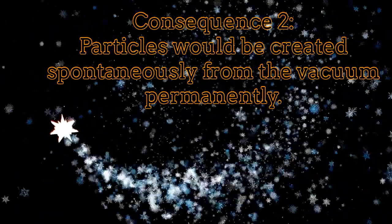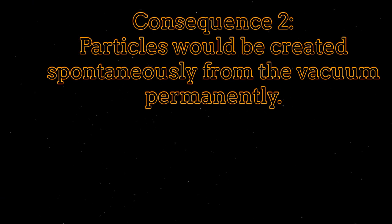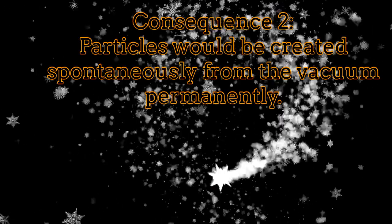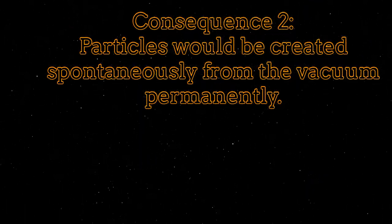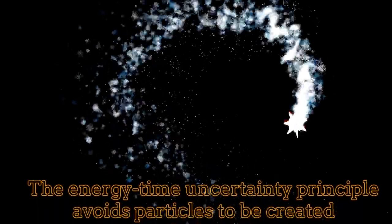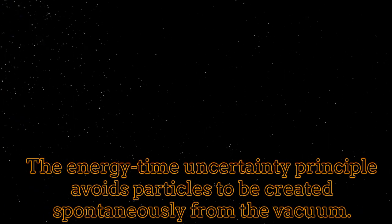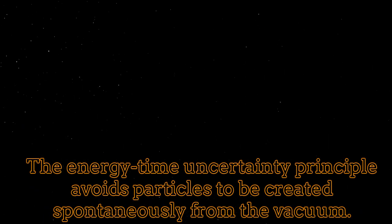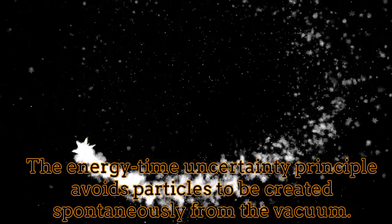The second consequence of violating the uncertainty principle in quantum mechanics is that the vacuum would be permanently creating particles spontaneously, without any apparent reason. In fact, thanks to the uncertainty principle in quantum mechanics, when the vacuum creates particles from nothing, these particles just annihilate each other quickly, following then the energy-time uncertainty principle. The higher the energy of the particles involved, the shorter the time they live over the vacuum.